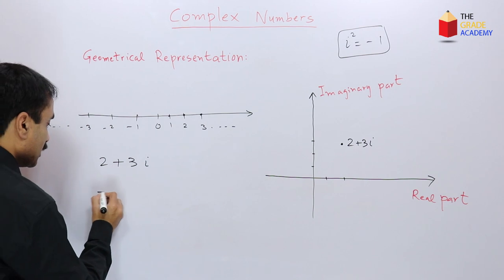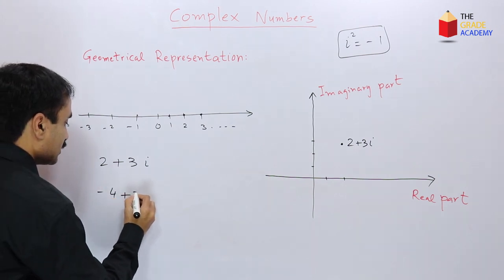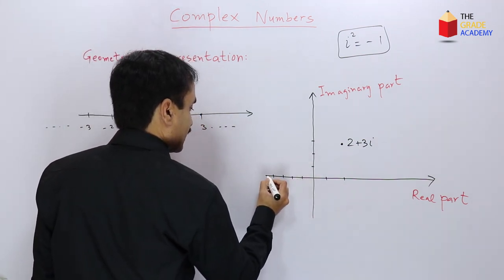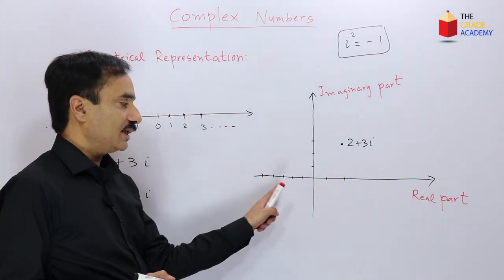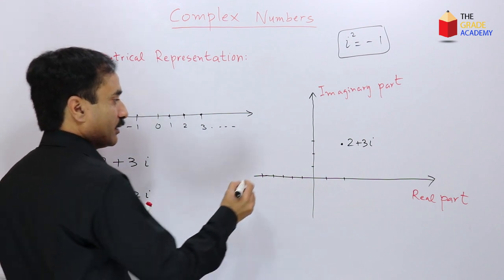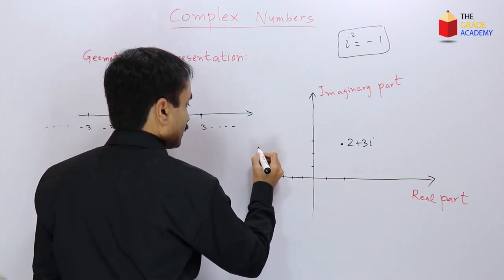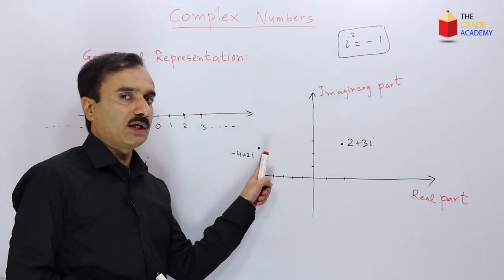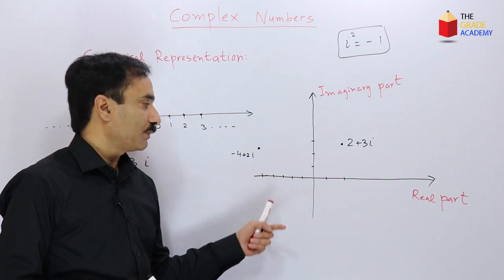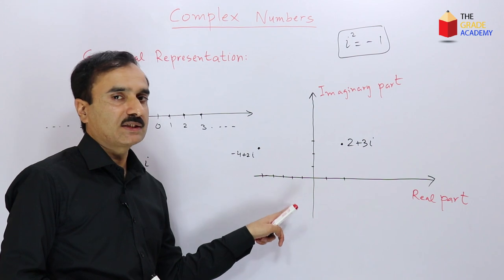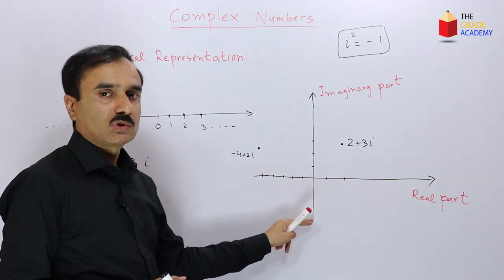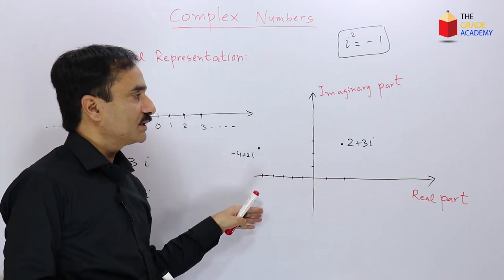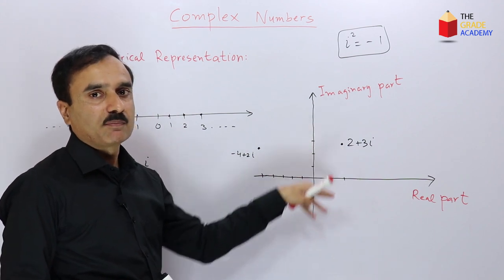Similarly, the number negative 4 plus 2i can be represented as 4 units on the negative x-axis and 2 units on the positive y-axis, giving a corresponding point. We can express any complex number on this plane. The system of complex numbers combines real numbers and imaginary numbers in the form of a two-dimensional number system.